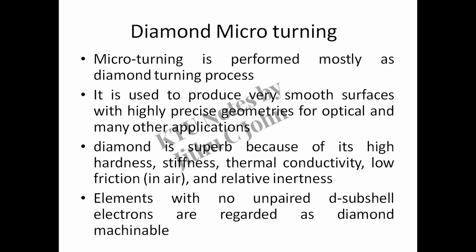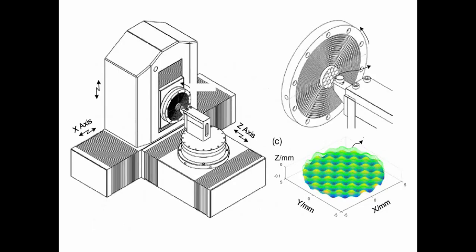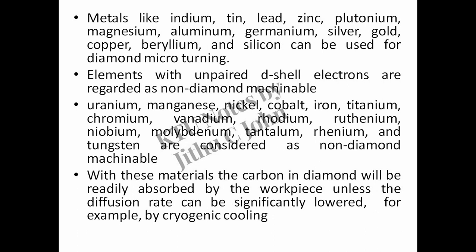Diamond micro turning. Micro turning is performed mostly as a diamond turning process, used to produce very smooth surfaces with highly precise geometries for optical and many other applications. Diamond is superb because of its high hardness, stiffness, thermal conductivity, low friction in air, and relative inertness. Elements with no unpaired D subshell electrons are regarded as diamond machinable. Metals like indium, tin, lead, zinc, plutonium, magnesium, aluminum, germanium, silver, gold, copper, beryllium, and silicon can be used for diamond micro turning.